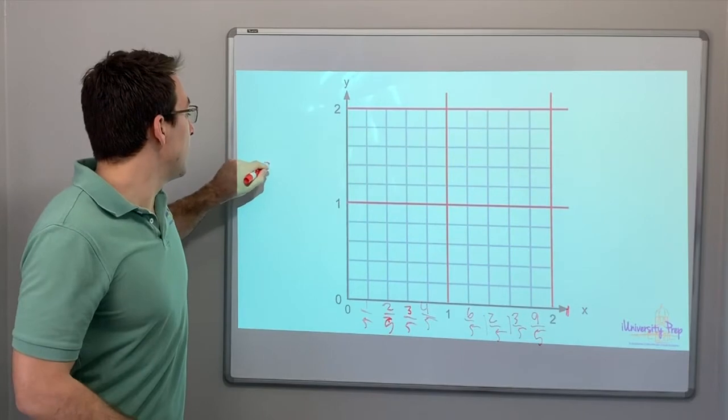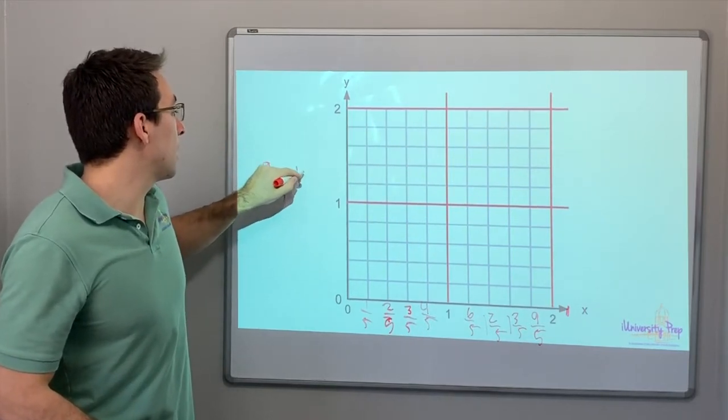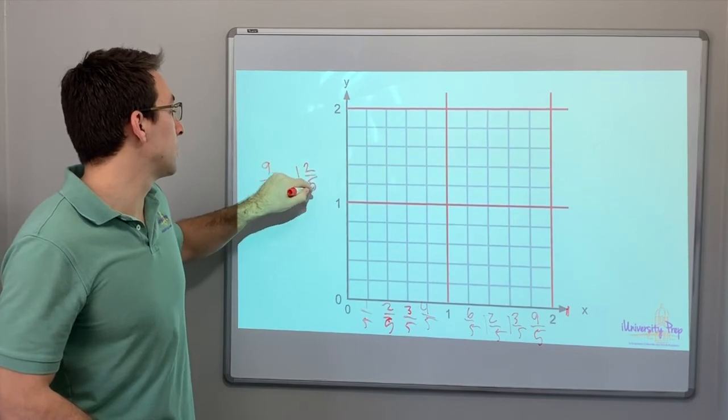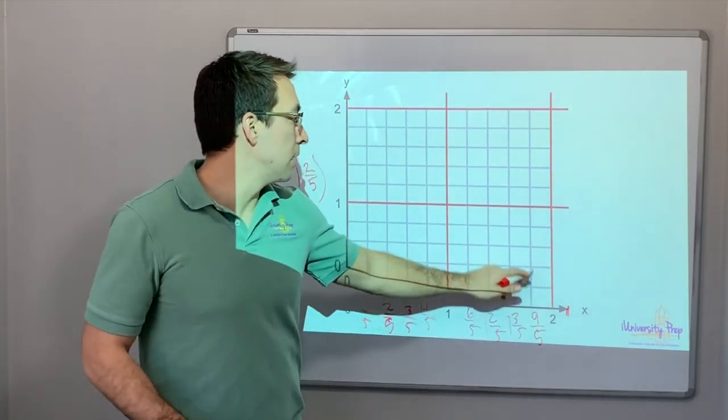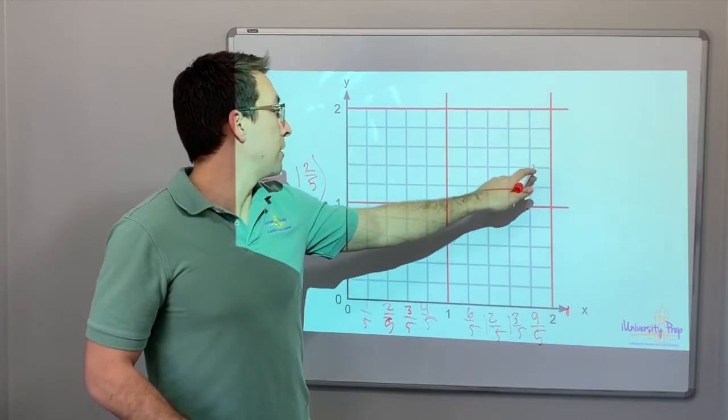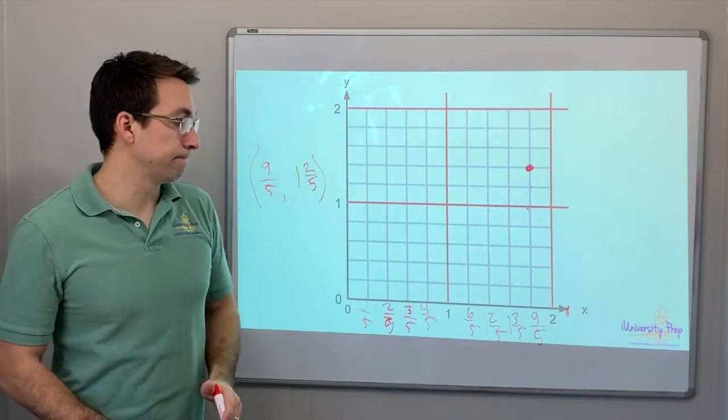So let's go 9 fifths and then 1 and 2 fifths. Okay. So we'll go all the way to 9 fifths. Here's 1, and then 1 fifths, 2 fifths.